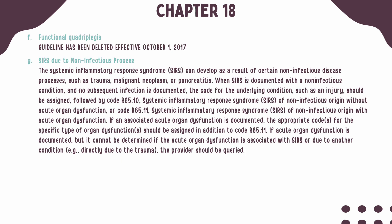Systemic inflammatory response syndrome, also referred to as SIRS, can develop as a result of certain non-infectious disease processes such as trauma, malignant neoplasm, or pancreatitis. When SIRS is documented with a non-infectious condition and there is no subsequent infection documented, the code for the underlying condition should be assigned first, followed by code R65.10 or R65.11, depending on whether acute organ dysfunction is present. If acute organ dysfunction is present, the appropriate code for the organ dysfunction should be reported in addition to code R65.11. If the acute organ dysfunction cannot be determined to be associated with SIRS or due to another condition, you should query the provider.